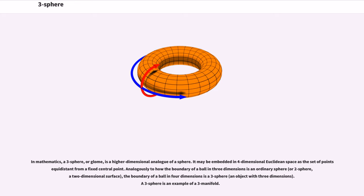Three-sphere. In mathematics, a three-sphere, or glome, is a higher dimensional analog of a sphere.